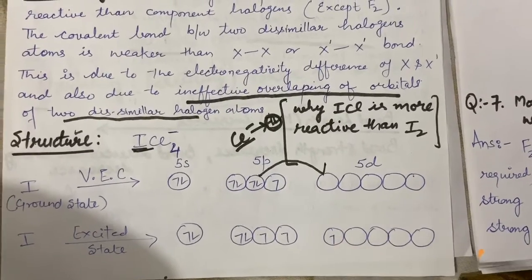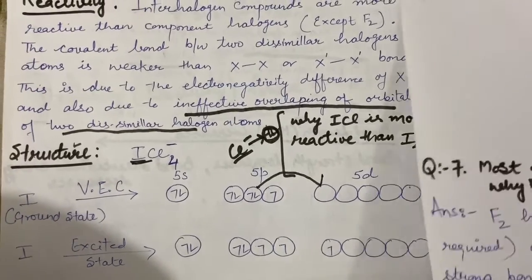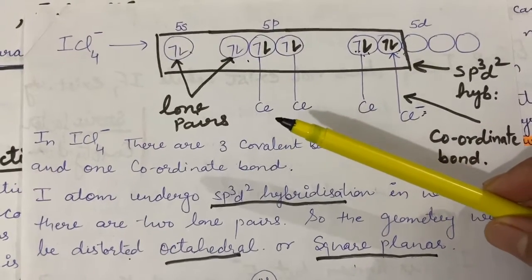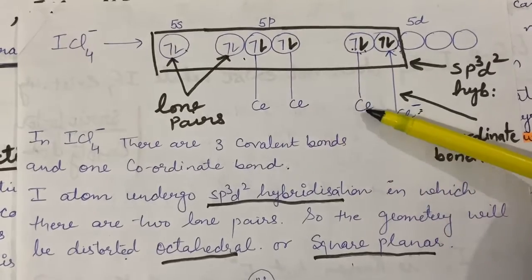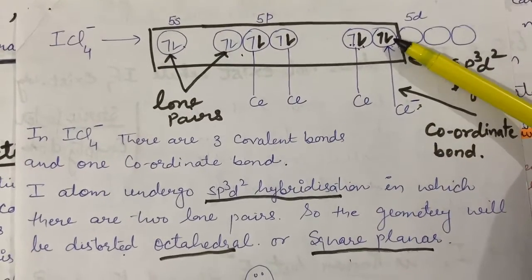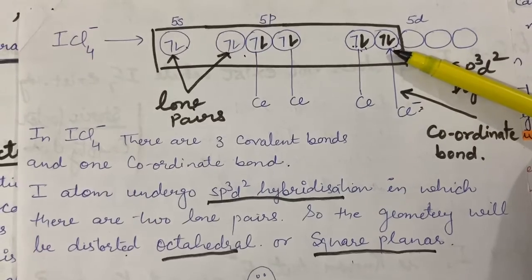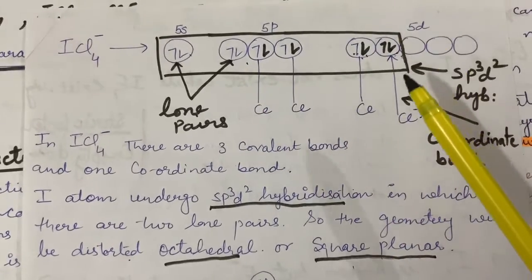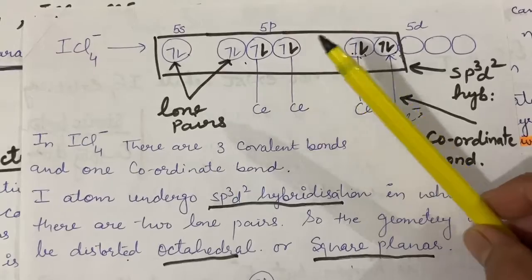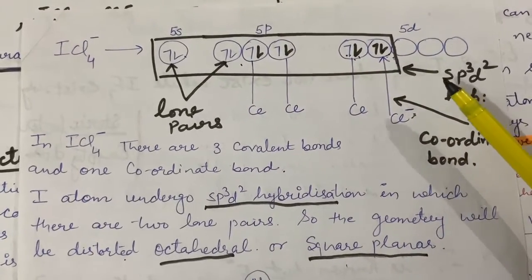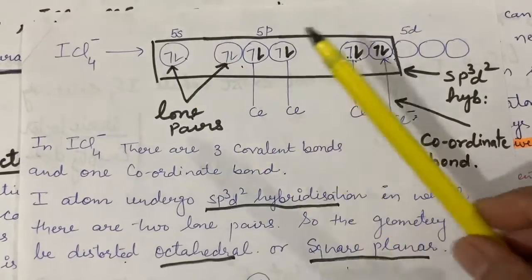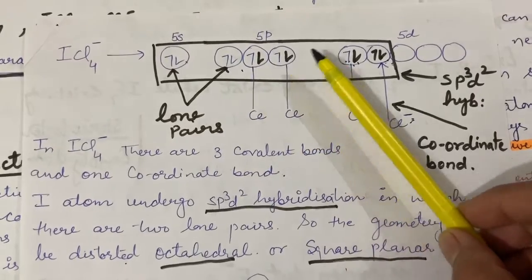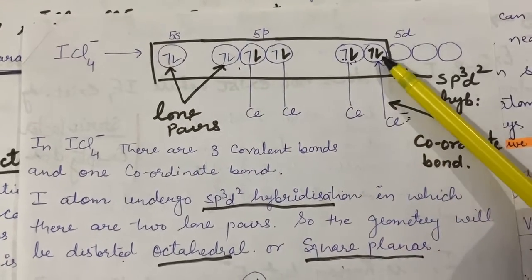This results in the formation of 3 unpaired orbitals. These 3 unpaired orbitals will overlap with the unpaired orbitals of Cl. The 3 Cl atoms overlap with these, and the empty d-orbital allows Cl⁻ to make a coordinate bond. So the hybridization of the iodine atom in ICl4⁻ is SP³D², using s, p, and two d-orbitals. In this hybridization there are 2 lone pairs, 3 normal covalent bonds, and one coordinate bond in which both electrons were given by Cl.